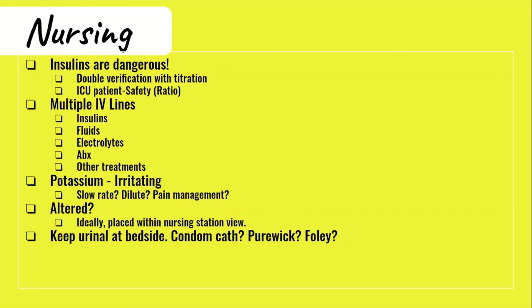Some nursing-specific tips: insulins are very dangerous — always have another nurse perform a double verification when starting and titrating the insulin drip. Place multiple IVs early, as you will be running fluids, an insulin drip, electrolyte replacements, and possibly antibiotics simultaneously — aim for at least two IVs so everything can be given in a timely manner. Potassium is irritating to veins, so if it's hurting the patient, slow the rate down or dilute it by running a compatible fluid through the same line. If your patient is altered, keep them within your line of sight to prevent falls while connected to lines.